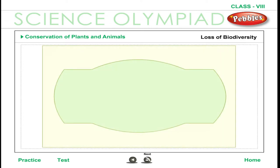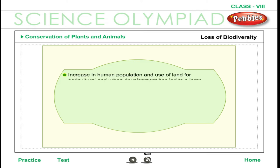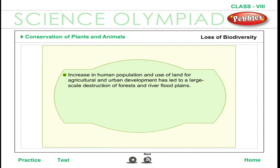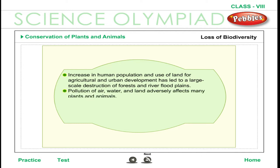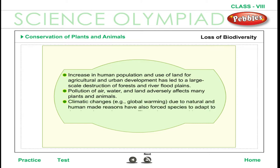Loss of Biodiversity. Some of the major causes of loss of biodiversity are as follows: Increase in human population and use of land for agricultural and urban development has led to large-scale destruction of forests and river flood plains.